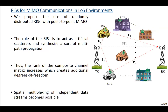In order to restore the spatial multiplexing gain in the case of a line-of-sight environment, we propose the use of randomly distributed reconfigurable intelligent surfaces with point-to-point MIMO communication. The role of these RIS is to act as artificial scatters and introduce multi-path propagation. In short, we convert the line-of-sight environment into an artificial rich scattering environment. By this method, we improve the rank of the channel matrix to restore the spatial multiplexing gain and achieve high capacity gains.